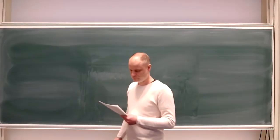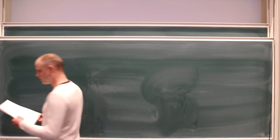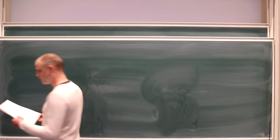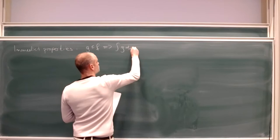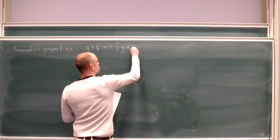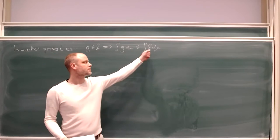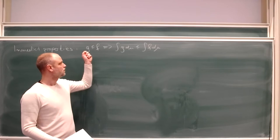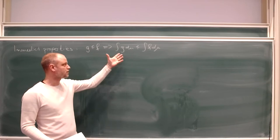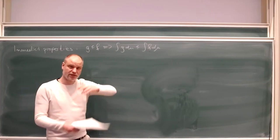Once you have a definition, you list properties. A few are immediate. For example, if g ≤ f, both measurable, then the integral of g is less than or equal to the integral of f. This holds because all simple functions involved in the supremum for g are also below f, so the supremum for f is taken over a larger set.